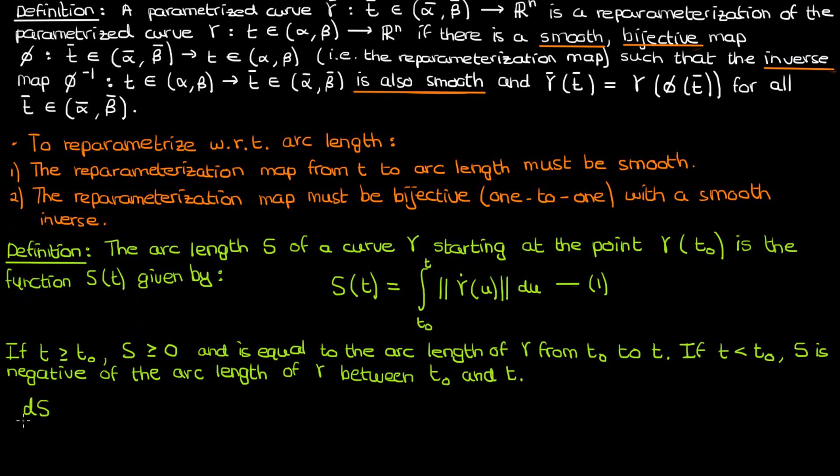Let's now take the derivative of equation 1. If we do that, we'll get the time derivative of the integral from t₀ to t of the magnitude of γ̇, which equals the magnitude of γ̇ by the fundamental theorem of calculus. I'll call this equation 2.